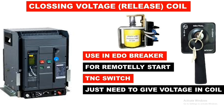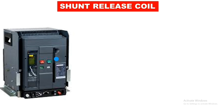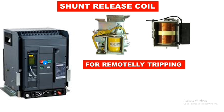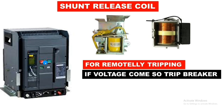The next coil is the shunt release coil. You can see the shunt release coil structure here. The main function of this shunt release coil is to remotely trip the air circuit breaker. We have two switches for locally starting and stopping. But if you want to trip your air circuit breaker remotely from any other place, you need to connect a shunt release coil, which allows you to trip the breaker remotely.